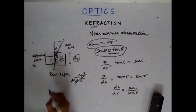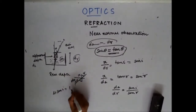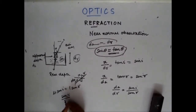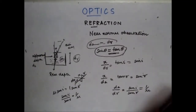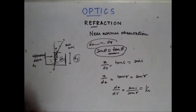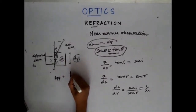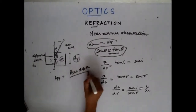What is this? If I apply Snell's rule, I get mu × sin i = 1 × sin r, or sin i by sin r equals 1 by mu. So this equals 1 by mu, and I get apparent depth = real depth / mu.